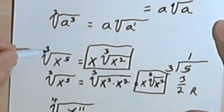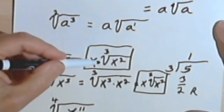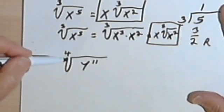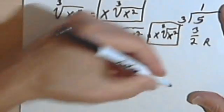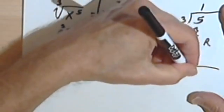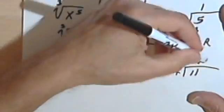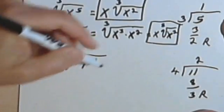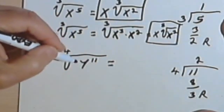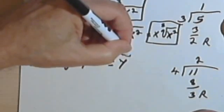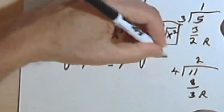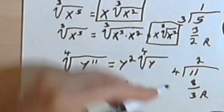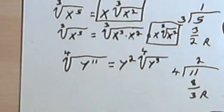Just dividing the index into the exponent of the radical gets there a lot faster. Let's do one more. I've got the fourth root of y to the eleventh. 4 divided into 11 goes 2 times. 2 times 4 is 8, so I've got a remainder of 3. This 2 is going to be the exponent for my variable outside of the radical sign, and the fourth root of y — with remainder 3 as the exponent — is what I'm left with under the radical sign.